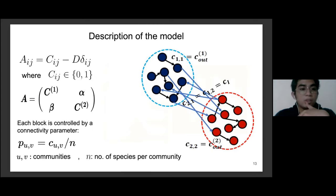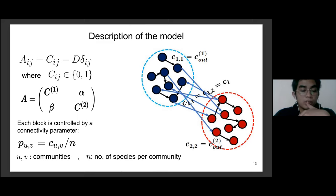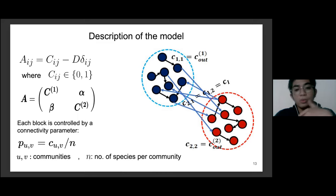From these ideas we build our model. The main idea is that we have two communities interacting within themselves and with each other. We use directed random graphs where the connection inside a community is controlled by a connectivity parameter p, equal to c_uv over N, where u and v are the communities and we divide by N to ensure sparse connections. Community one is controlled by c_11 (or c_l1), community two by c_22 (or c_l2), and inter-community connections by c_i.